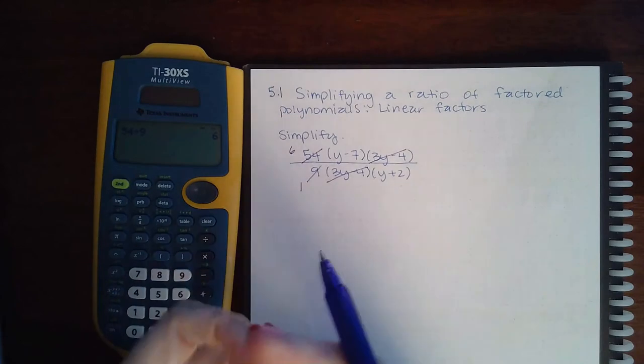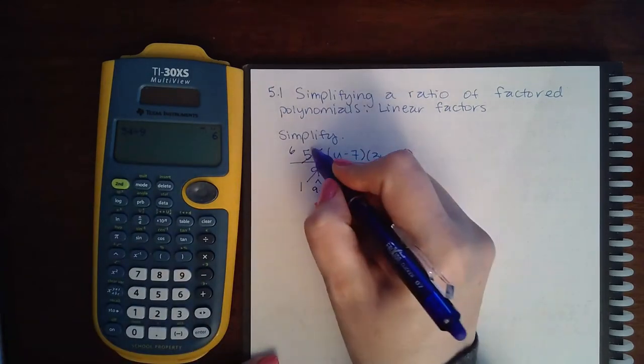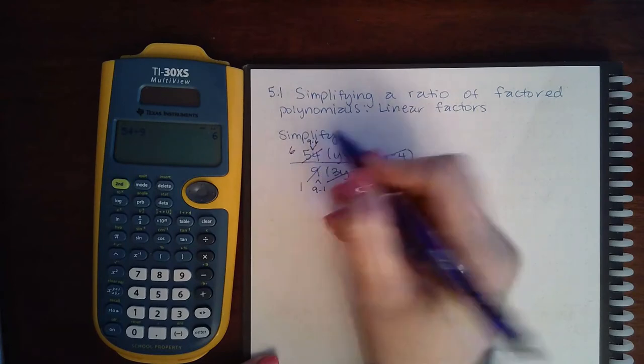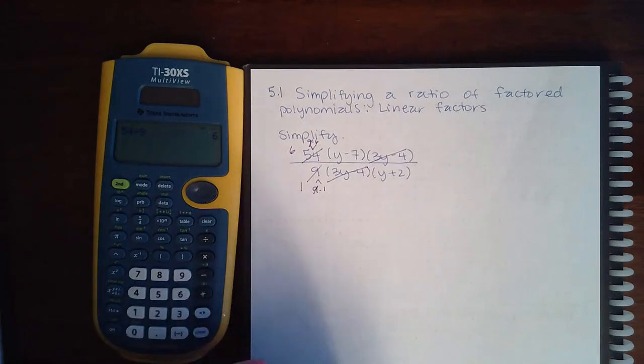You can only cancel factors. So like 9 can be written as 9 times 1, 54 can be written as 9 times 6. And it is the factor 9 that I canceled there to get the 6 and the 1.